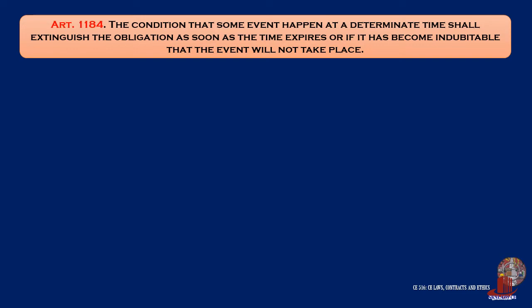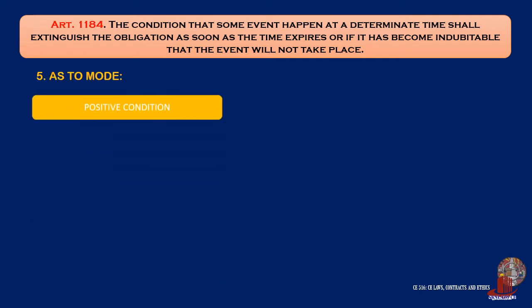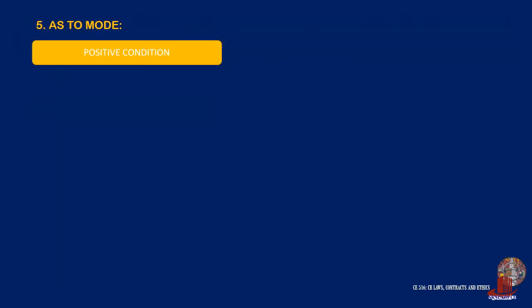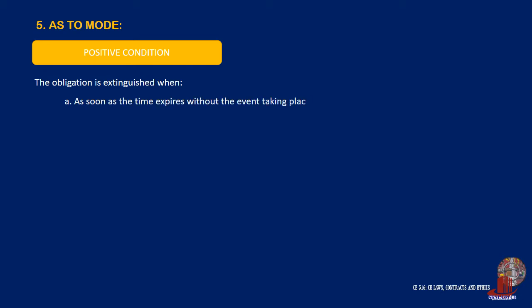The fifth category for the different kinds of condition is mode. The above article refers to positive suspensive condition, which is described as the happening of an event at a determinate time. There are different cases for the extinguishment of the obligation under positive condition. The first case is as soon as the time expires without the event taking place.